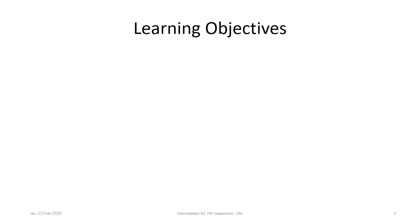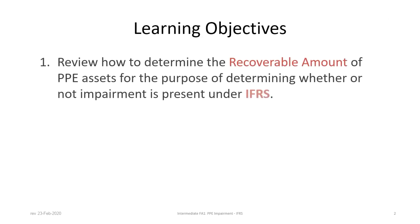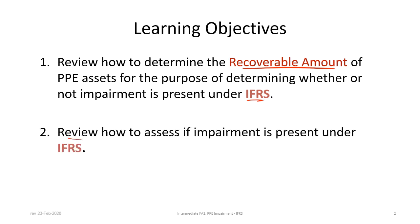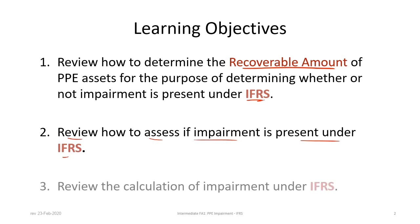There are three learning objectives for this tutorial. First, we will review how to determine the recoverable amount of PPE assets for the purpose of determining whether or not impairment is present under IFRS. Second, we will review how to assess if impairment is present under IFRS. And third, review the calculation of impairment under IFRS.